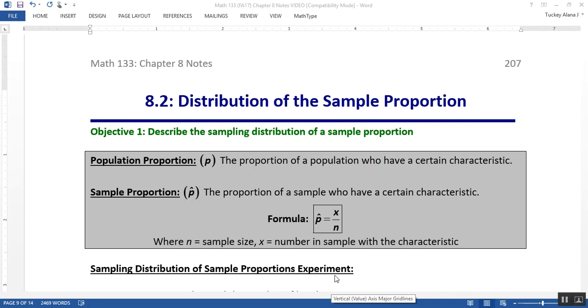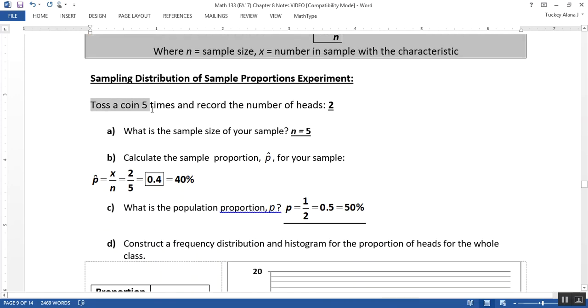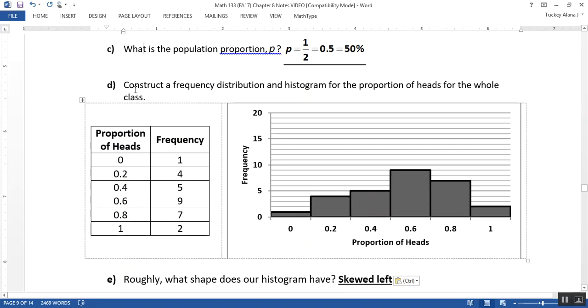In our last video we were looking over the sampling distribution of sample proportions. Namely, we took a sample of five coin tosses, recorded the number of heads, and then imagined doing that same sample of size five over and over again. We'll be able to create a distribution from that, like a histogram and table.